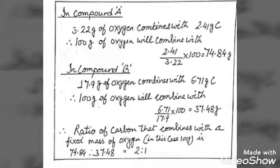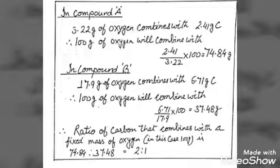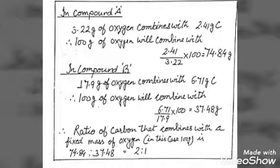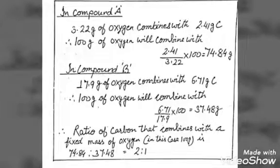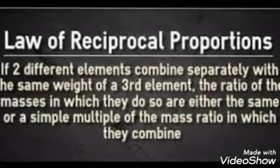Therefore, the ratio of carbon that combines with the fixed mass of oxygen is 74.84:37.48, or 2:1.